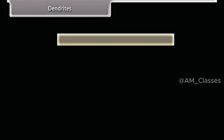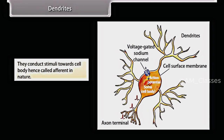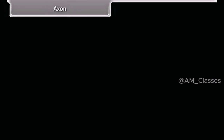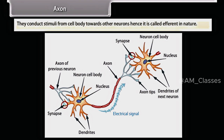Dendrites are small-sized branched fibers, many in number. They conduct stimuli to the cell body, hence are called afferent in nature. The axon is the largest fiber of the cell — long-sized, unbranched and only one in number. It conducts stimuli from the cell body towards other neurons, hence it is called efferent in nature.